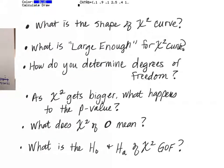So we learned about a new curve yesterday, a new distribution, how things are laid out and how the data falls. First of all, what is the shape of that new curve that we determined — chi-squared? Skewed right. Very good.